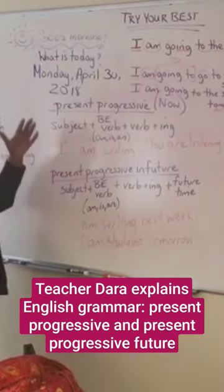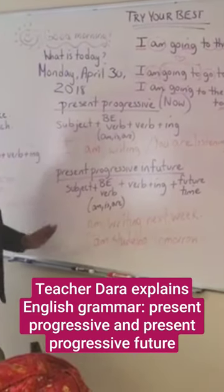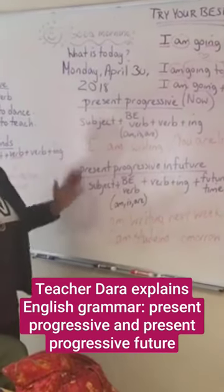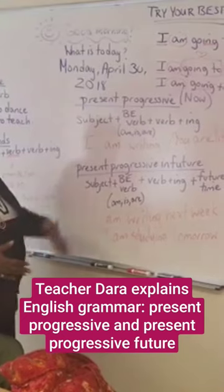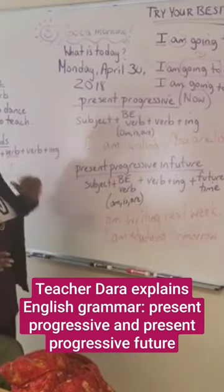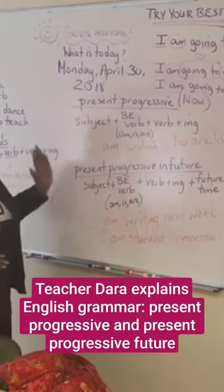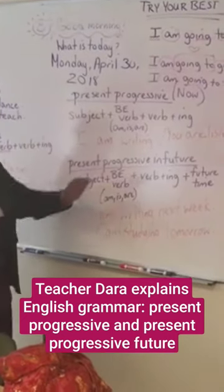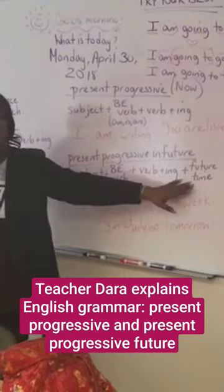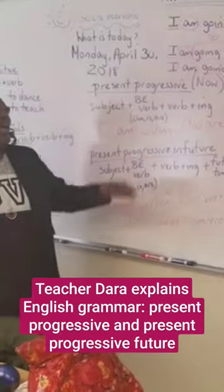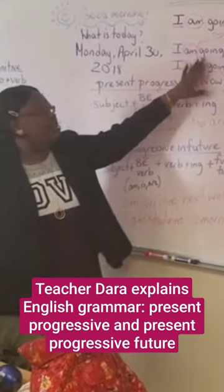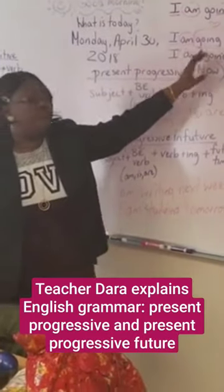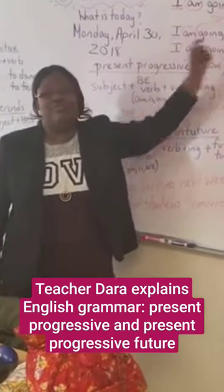So it's very important to know the difference between these three, because sometimes students get confused about which one to use. The most important thing is: present progressive is for now, present progressive with future time uses a future time marker, and if we're using 'going to' in the future, the second verb has no change.